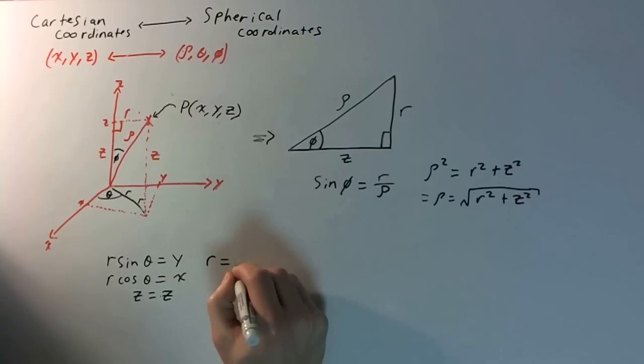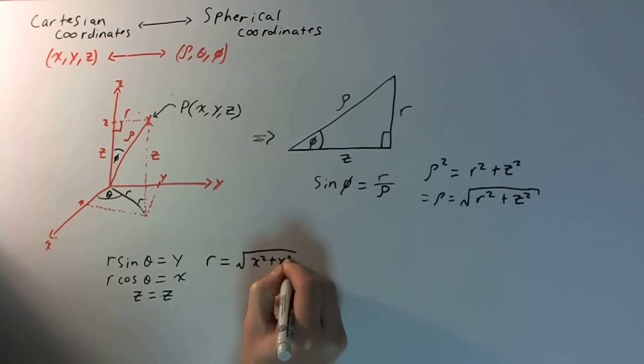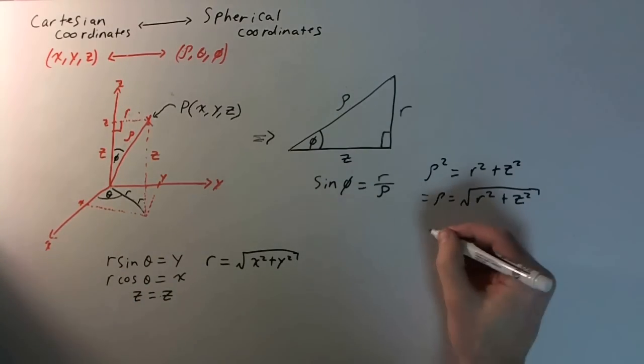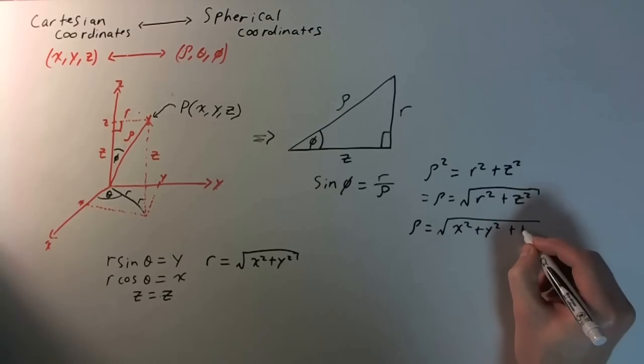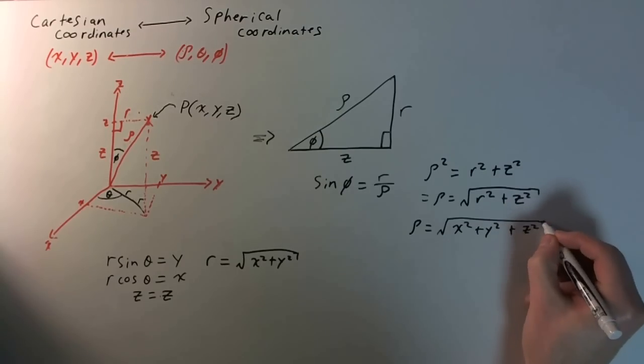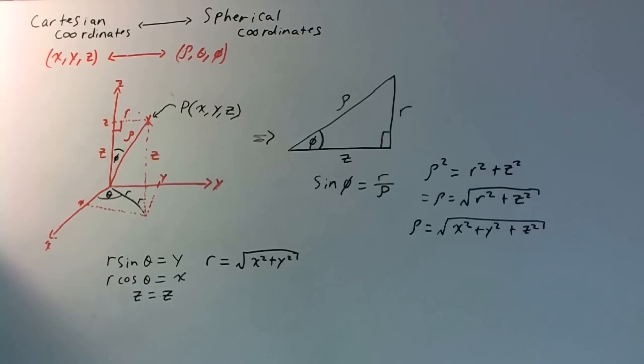But the thing is, we know what r squared is, because we know from polar coordinates that r squared is just x squared plus y squared. So, we just plug this in, and we can find that rho is going to be equal to the square root of x squared plus y squared plus z squared. So, that's great. Now, we know the length of rho in terms of x, y, and z.